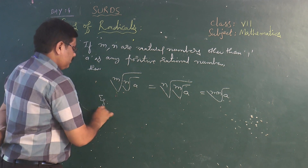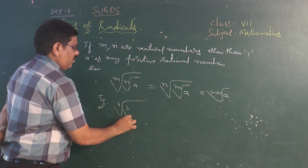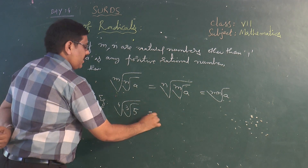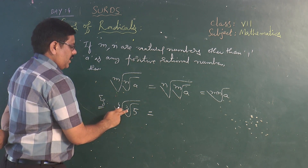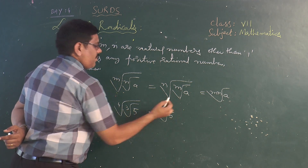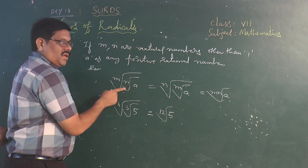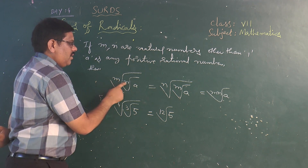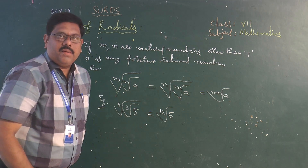Example: find the value of 4th root of cube root of 5. We can write it as 4th root of cube root, where m is 4 and n is 3. The product of these two orders is 12, so it is the 12th root of 5. Whenever you have mth root of nth root of a, you multiply the two orders m times n to get the mn-th root of a.